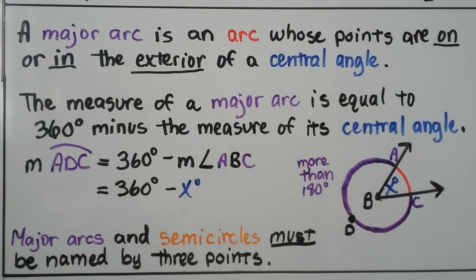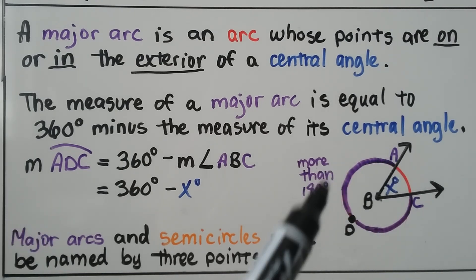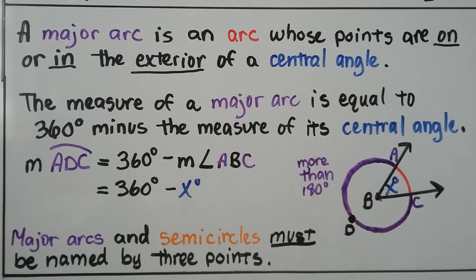A major arc is an arc whose points are on or in the exterior of a central angle. The measure of a major arc is equal to 360 degrees minus the measure of its central angle. So the measure of arc ADC, so that would be ADC, is equal to 360 degrees minus the measure of angle ABC. So it's 360 degrees minus x degrees, whatever the central angle is. Major arcs and semicircles must be named by three points.